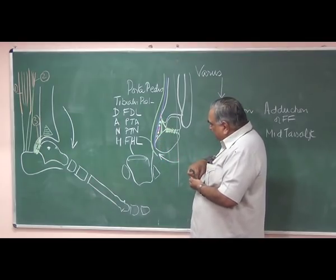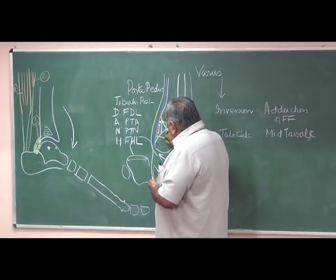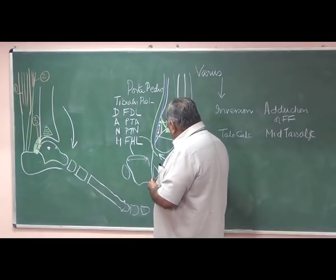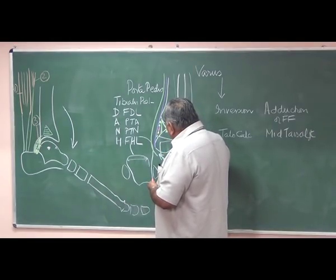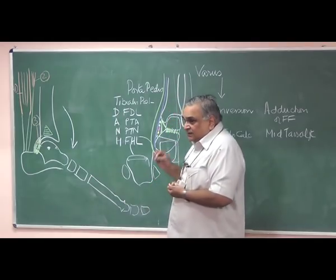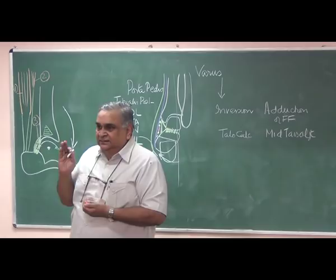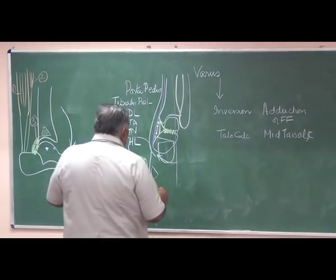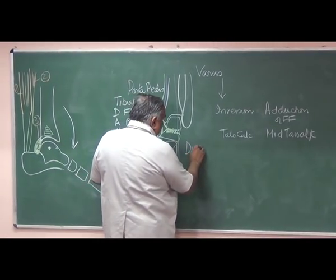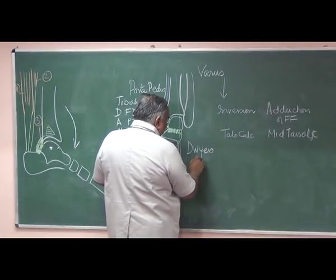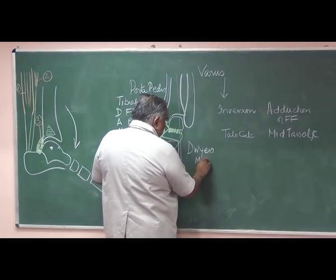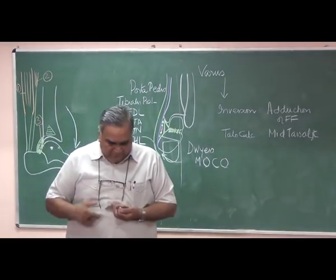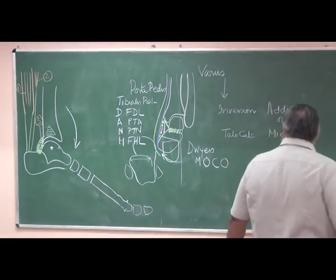Another operation you can do is divide the calcaneum, called a medial calcaneal osteotomy, and place the lower portion straight. This is a medial open wedge calcaneal osteotomy, abbreviated as MOCO — medial open wedge calcaneal osteotomy.